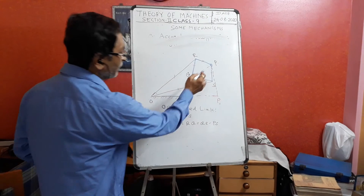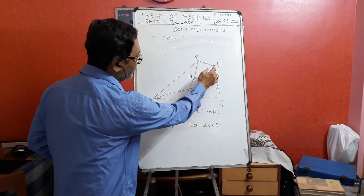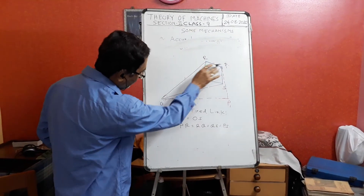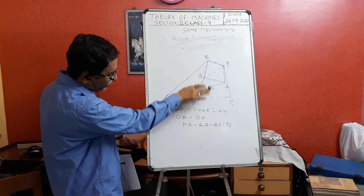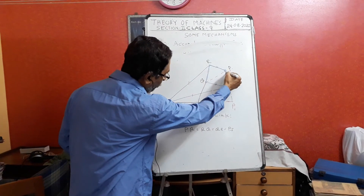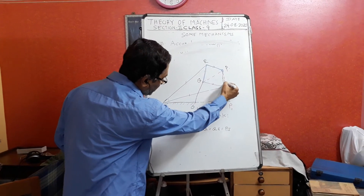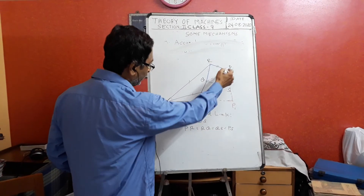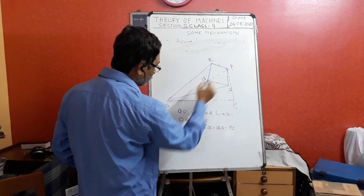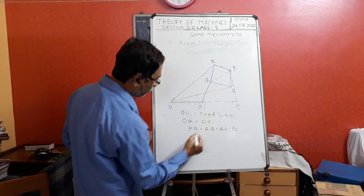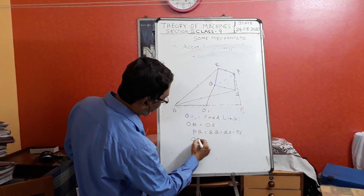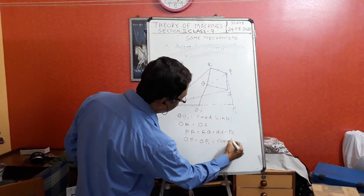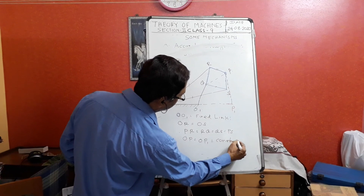Now, the point P — just as we saw in the diagram — as the whole mechanism moves, the P point will move along a straight line. We have to prove that OP equals OP1 equals a constant. This is what we need to prove.